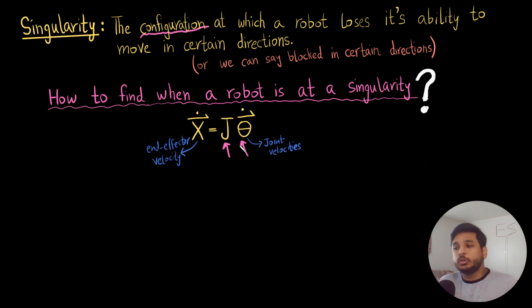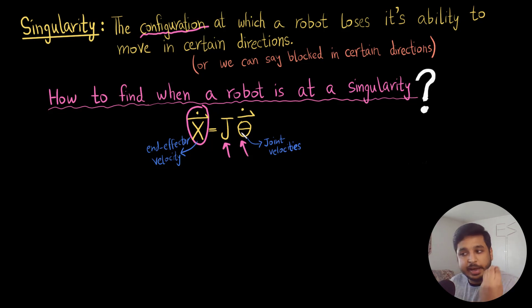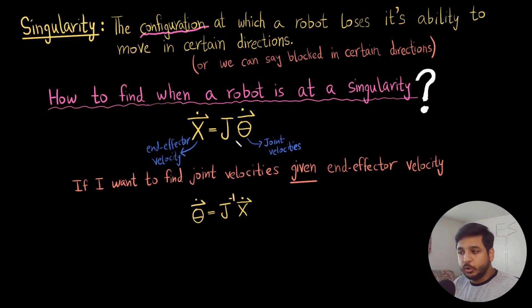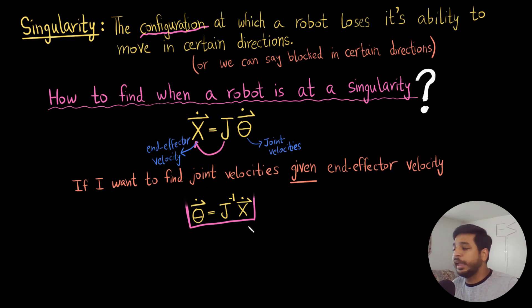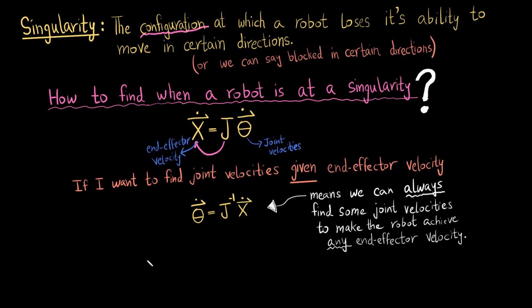Now, let's say you give me any end effector velocity x_dot and I need to find out the required joint velocities theta_dot to achieve that particular end effector velocity. The way to do that is to take the Jacobian inverse and bring it to the other side. So we get theta_dot = J^{-1} * x_dot. With this equation, for any end effector velocity, I just multiply it with the Jacobian inverse and I get the joint velocity.